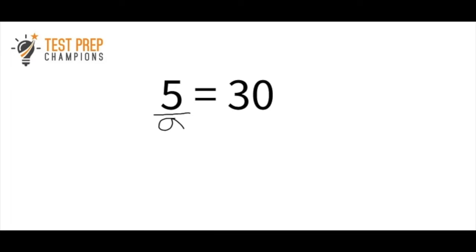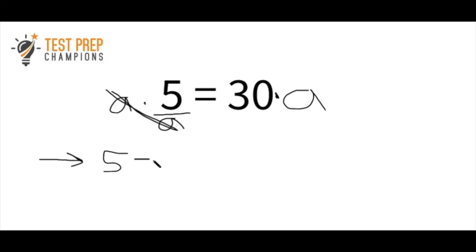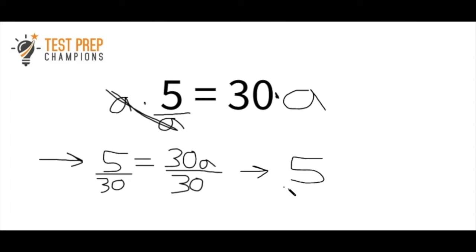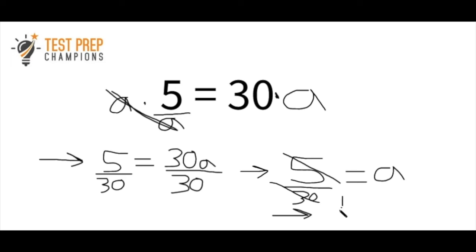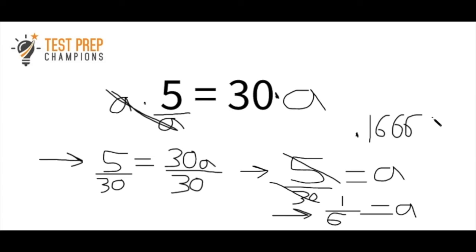The next question: 5 over a equals 30. To get a by itself, multiply both sides by a — that gives 5 equals 30a. Then divide both sides by 30, giving 5 over 30 equals a. Simplifying the fraction by dividing top and bottom by 5 gives 1 over 6 equals a. If you used a calculator and left it as a decimal, you would get 1.66666 repeating.